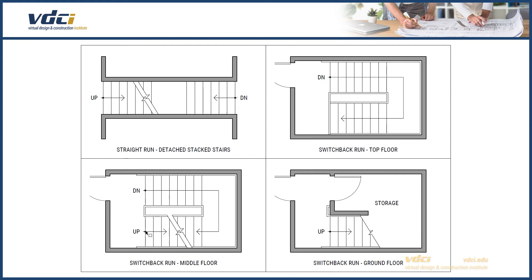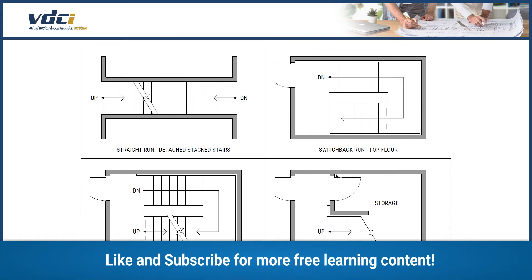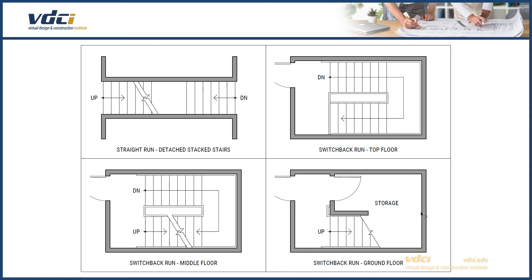In our plan view, the stairs are running down underneath the stairs running up. At the bottom of our stair tower, we only have upstairs; however, we know that this stair will turn at the landing and continue up — we know that by looking at other floor plans for the stair tower. So how can we have a storage space underneath it? The key to remember about floor plans is it is not always a full-height space. In this case, the storage room is a partial-height space placed underneath the stairs.